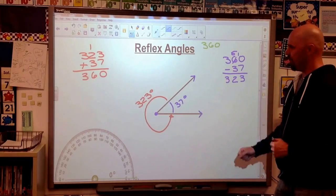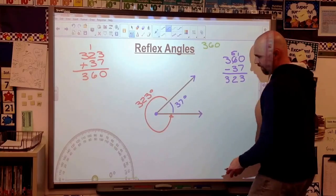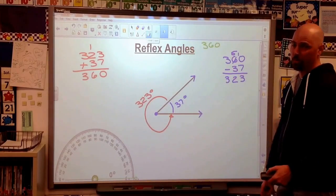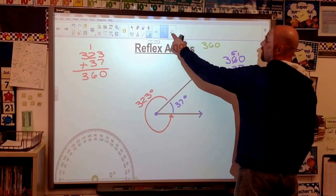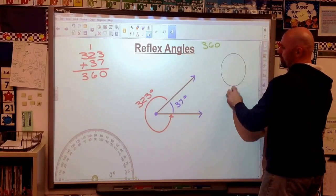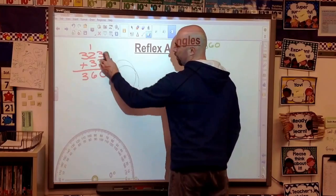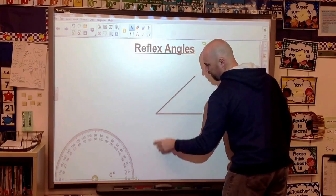So that's what we do if they give us the angle right there. They give us the angle. Now, what if I want you to create one on your own? We're not measuring. We're drawing these angles. We're still going to use that trick with the 360. We need to remember that number in our head. That's going to be important any time we do a reflex angle.